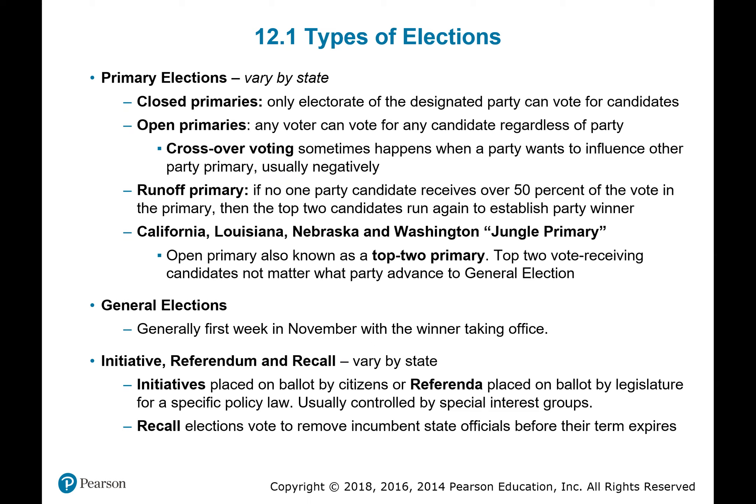We in California have something a bit different — it's called a jungle primary. It's an open primary where any voter can vote for any candidate regardless of party. Then you have a runoff for the general election where the top two candidates in California are on the general election ballot. This is different from many other states in that you could have two Democrats or two Republicans advancing in a given district.